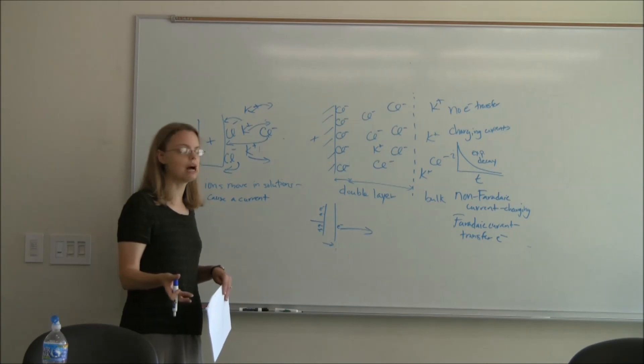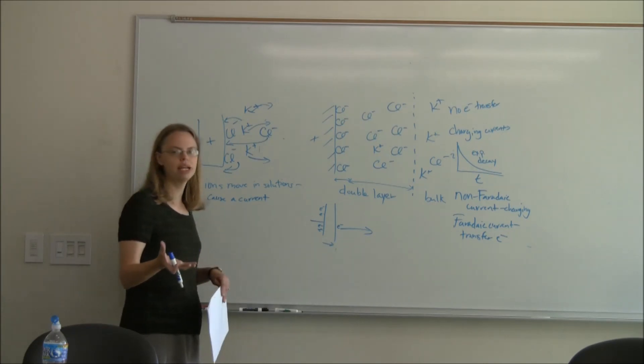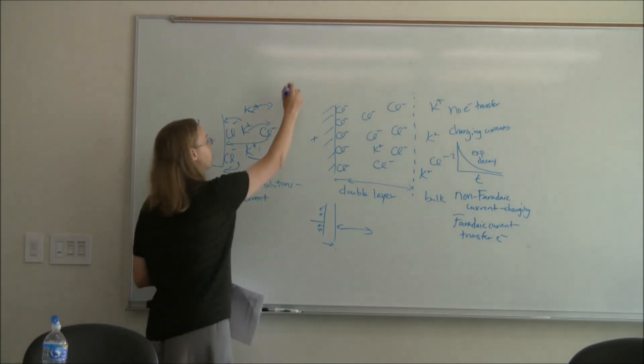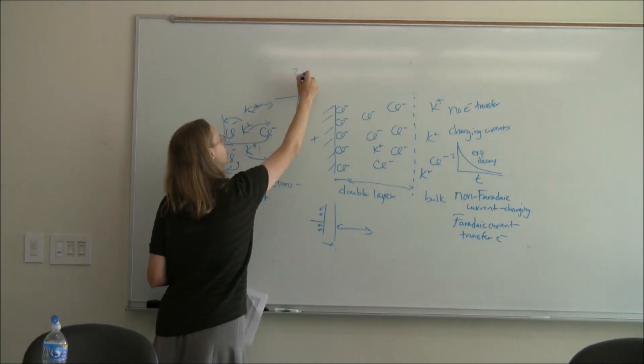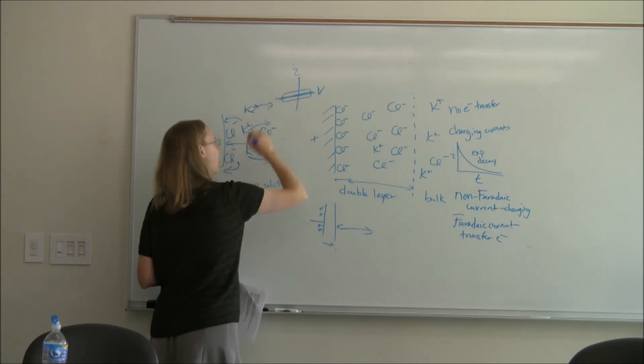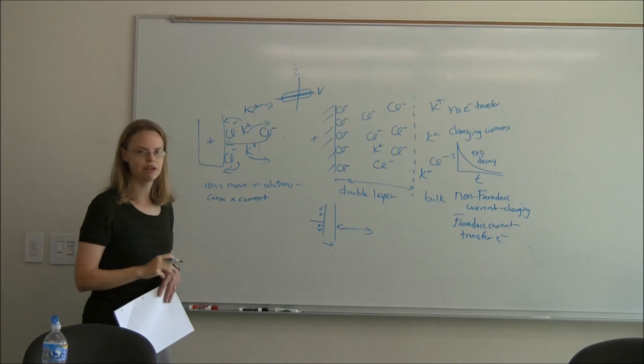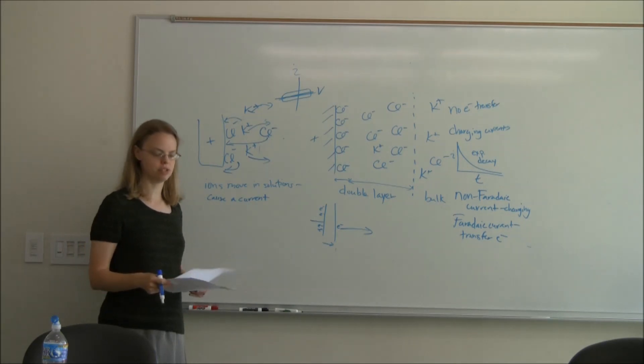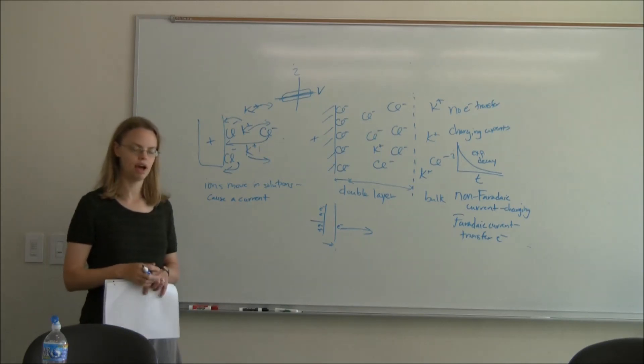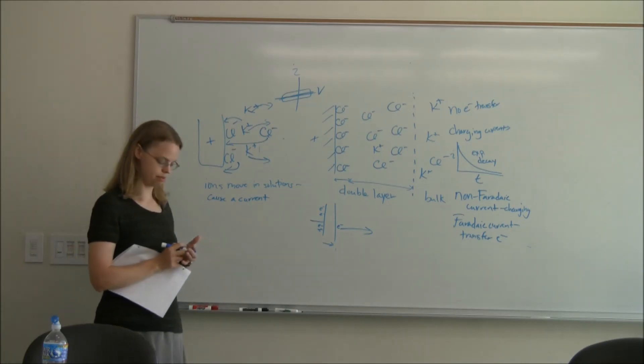So when you do your experiment in the lab, one of the things is we'll just run it in buffer, and you'll see what it looks like. And you won't get a perfectly, you won't get a CV I versus V that looks like this. You'll get a CV I that kind of looks something like that. And that is due to the background charging current. We can't get away from it. It's just a sort of process that always happens with electrochemistry.